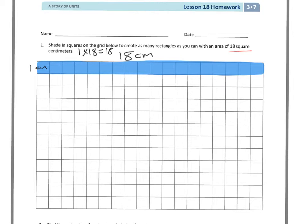And the area for this is 1 times 18 will get me 18. So my next one, I'm trying to think of factors, and I know 2 can go into it because 2 and 9. So I want to count over 9: 1, 2, 3, 4, 5, 6, 7, 8, 9.